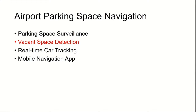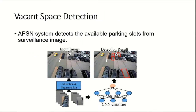Now let's go into vacant space detection. Our system should be able to detect available parking slots from the surveillance image only. The process works like this: the input image from the camera undergoes calibration, and we segment out all the areas of each parking slot. For each small patch, it represents one parking slot — some with cars, some empty. We feed these small images into a machine learning algorithm, specifically a convolutional neural network, and it outputs a prediction: with car or without car. We put labels on the detection result.